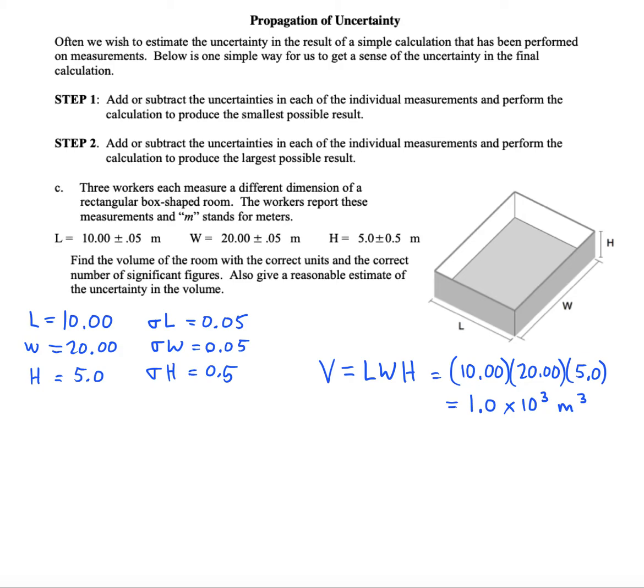What we'd like to do is figure out how much the uncertainty in the length will contribute to uncertainty in the volume. To do it we're going to use a new notation here, and this says that the uncertainty in the volume due to the length will be given by L plus sigma L times W times H. So we leave the width and the height alone and we just introduce the uncertainty in the length.